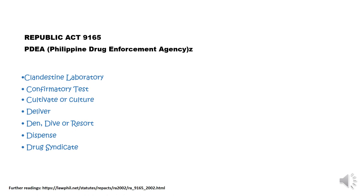The employee of den, dive, or resort includes the caretaker, helper, watchman, lookout, and other persons working in the den, dive, or resort employed by the maintainer, owner, and/or operator, where any dangerous drug and controlled precursor and essential chemical is administered, delivered, distributed, sold, or used with or without compensation in connection with the operation thereof. Financier refers to any person who pays for, raises, or supplies money for, or underwrites any of the illegal activities prescribed under RA 9165.